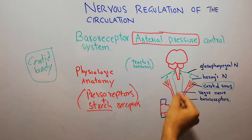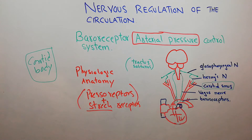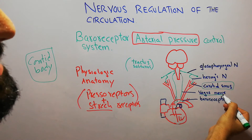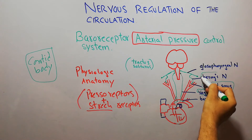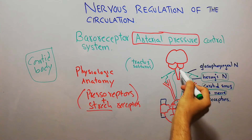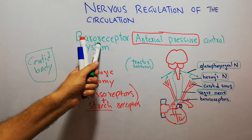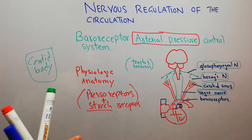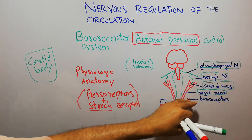The signals from these baroreceptors are carried toward the brain with the help of the vagus nerve and Hering's nerve. Signals from the carotid sinus — the baroreceptors at the bifurcation of the carotid arteries — are carried with the help of Hering's nerve, and from Hering's nerve the signals go to the brain with the help of the glossopharyngeal nerve. Baroreceptors are stretch receptors, also called pressoreceptors, present in large arteries of the thorax, with large numbers at the bifurcation of the carotid arteries and in the arch of the aorta.